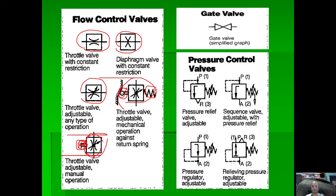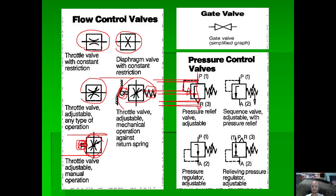For the pressure relief valve: the pressure at the inlet cannot go down, so that pressure also goes to the broken pilot line pushing the valve to open, allowing flow. If there is over-pressure the valve opens depending on the spring pressure setting, relieving the pressure. A pressure relief valve with arrow indicates it is adjustable.